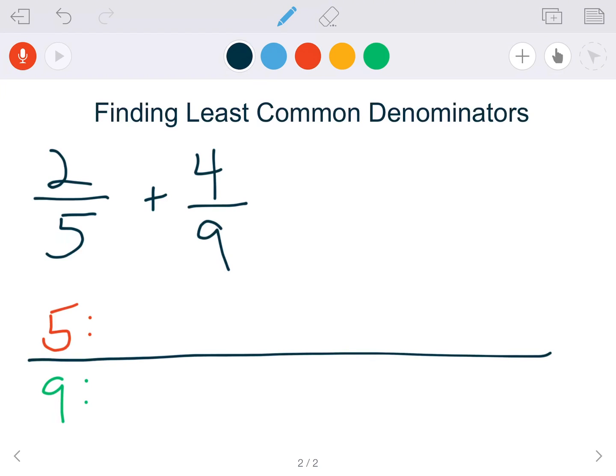What we're actually trying to find is something called the least common multiple, which looks a lot like the least common denominator. When talking about fractions, those two things are the exact same thing.